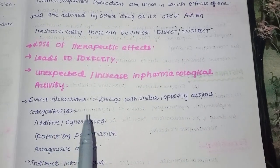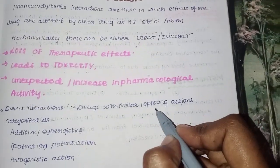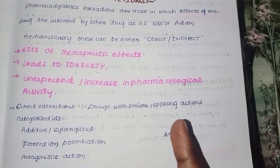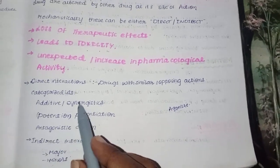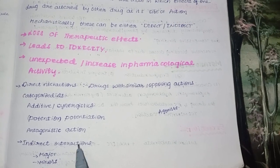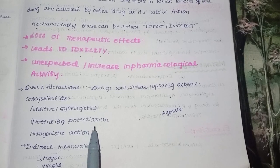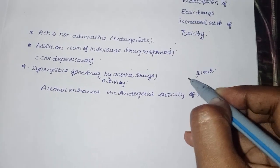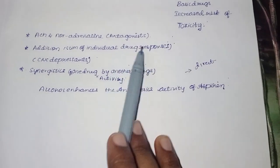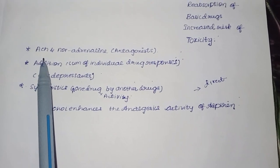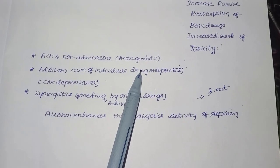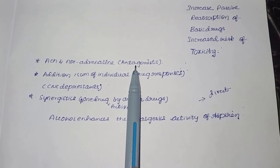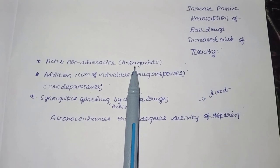Looking at direct interactions, there are three types. First is antagonism, where the action of one drug opposes the action of another drug — that is called antagonist action.